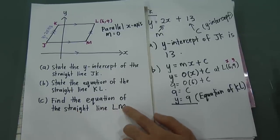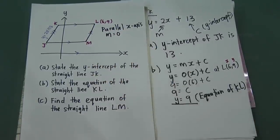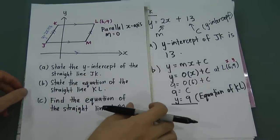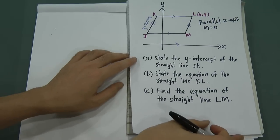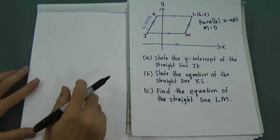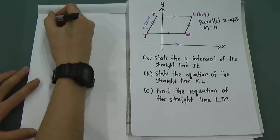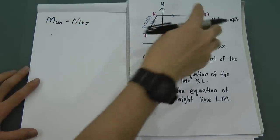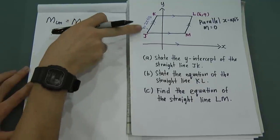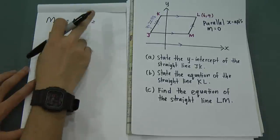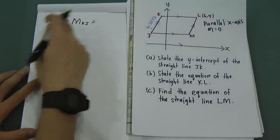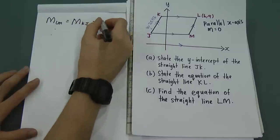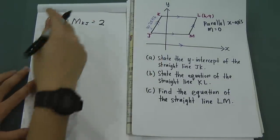Part (c): find the equation of straight line LM. Whenever you find an equation, you need two steps: find the gradient, then find the y-intercept. LM is parallel to JK, so gradient of LM equals gradient of JK. From y = 2x + 13, the gradient is 2.